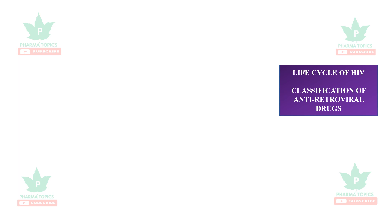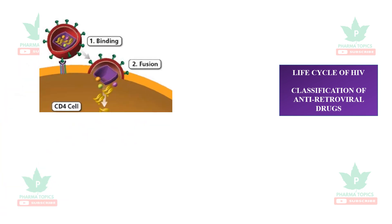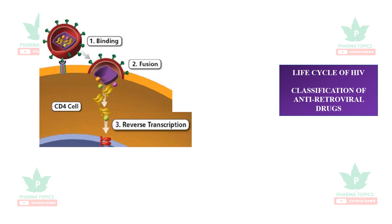Let us see the life cycle of HIV and the classification of antiretroviral drugs. The first step is the virus binding or fusing with the CD4 cells with the help of glycoproteins. Then the envelope opens and releases its RNA and enzymes along with it.